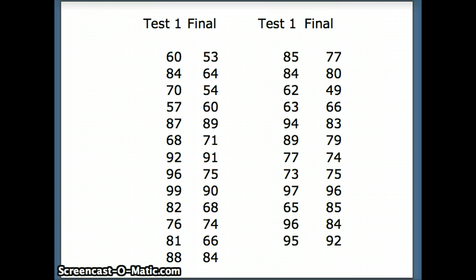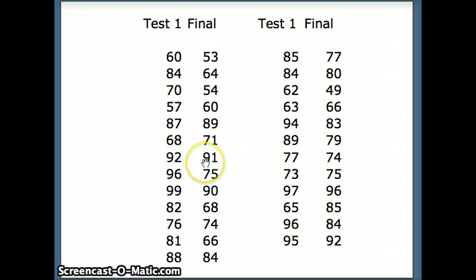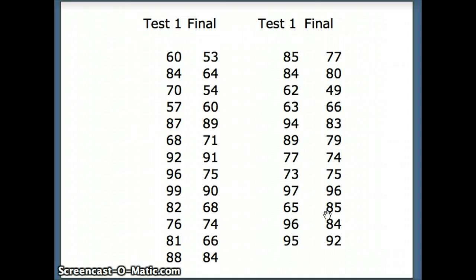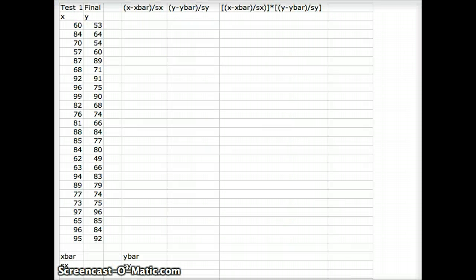Here is the data: we have scores for students in one class, with test one scores and final exam scores listed. A good student scored 92 on test one and 91 on the final; another scored 97 on test one and 96 on the final. A poor student scored 60 on the first test and 53 on the final. There are some anomalous cases — 81 on the first test but 66 on the final, or 65 on the first but 85 on the final — but for the most part high scores on test one indicate high scores on the final. Test one is in column x and the final is in column y.